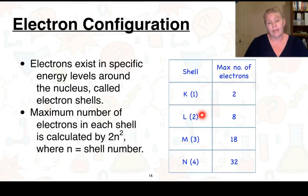So here we're looking at K, L, M and N shell. They are numbered 1 through to 4, and we can work out the maximum number of electrons that can fit in that. So when the shell number is 1, we have 2n², so 2 times 1 squared, which gives us 2. 2 times 2 squared gives us 8. 2 times 3 squared, 18, and so on.